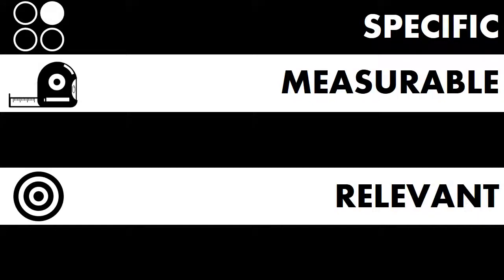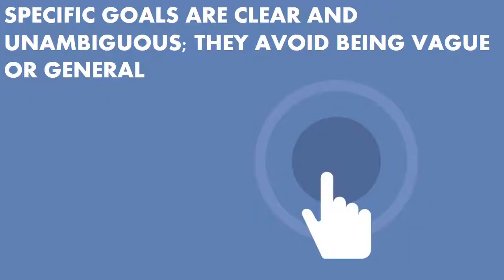We will start off by talking about specific, measurable, and relevant, because those three conceptually go together very well. So we'll talk about specific first. Specific goals are goals that are clear and unambiguous, and they avoid being vague or general.